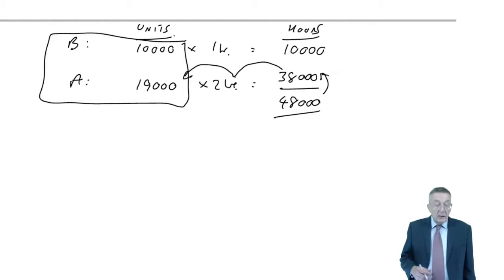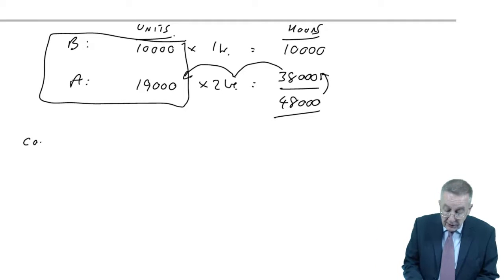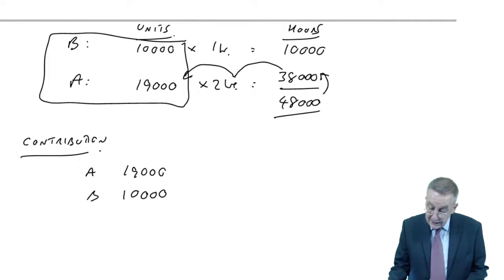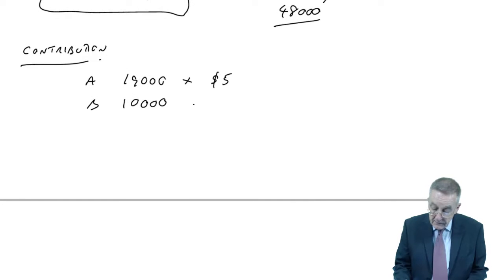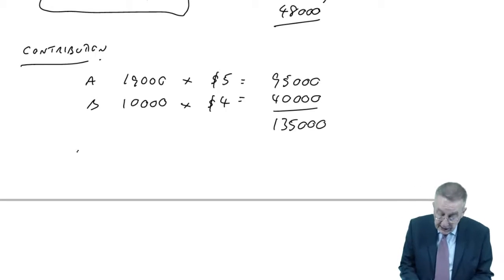This one does carry on and asks, what is the maximum profit? Let's look first at the contribution. We're making 19,000 As and 10,000 Bs. How much contribution are we earning per unit? Per unit, A gives $5 and B gives $4. So that's $95,000 plus $40,000, equals $135,000. There is the maximum contribution that we can earn.